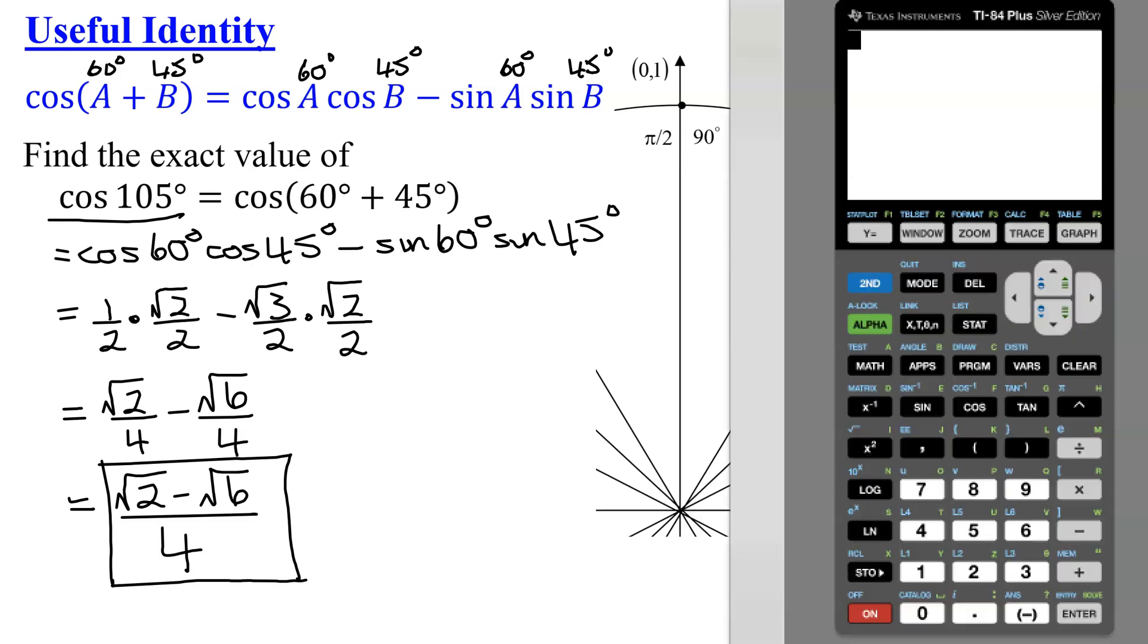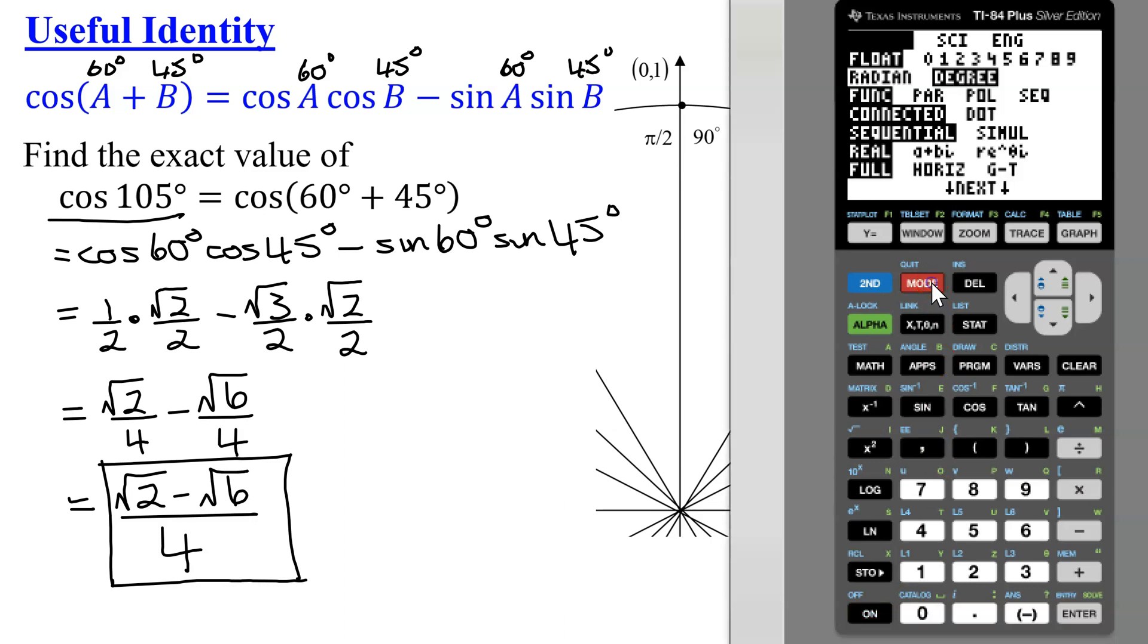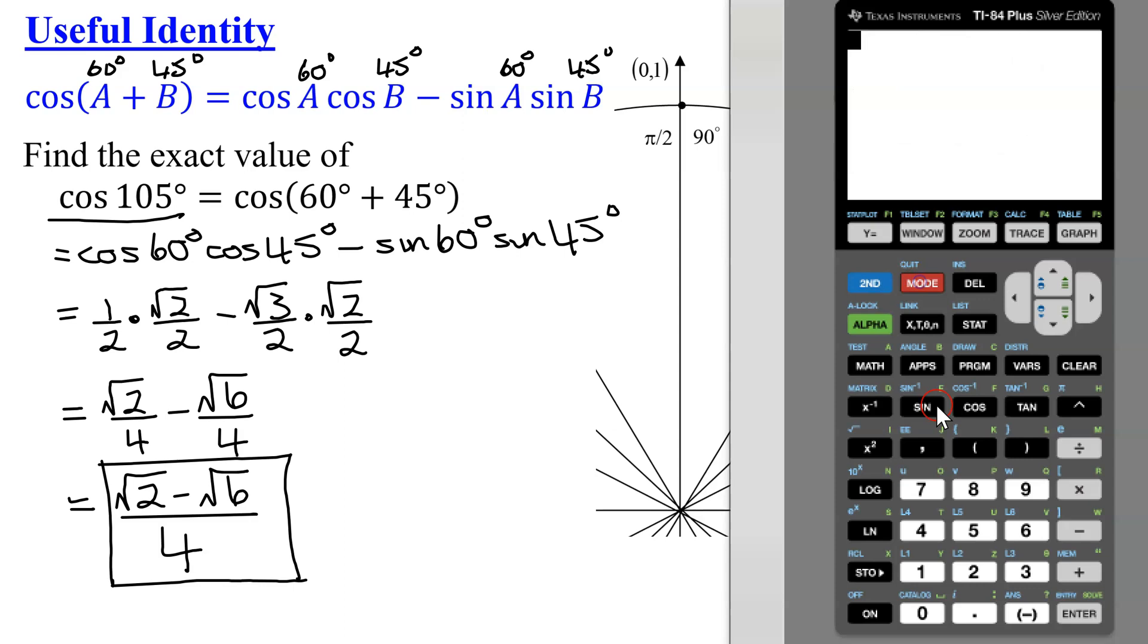We can quickly check your answer on the calculator. Make sure your calculator is in degree mode. And then find the cosine of 105 degrees. Hit enter, that is the approximate solution for the cosine of 105 degrees.